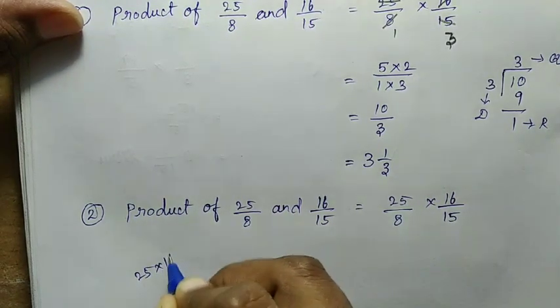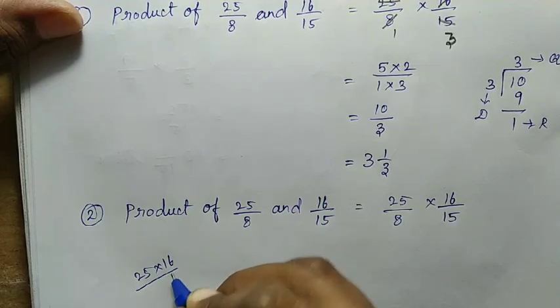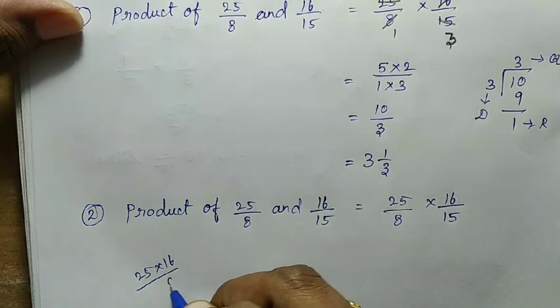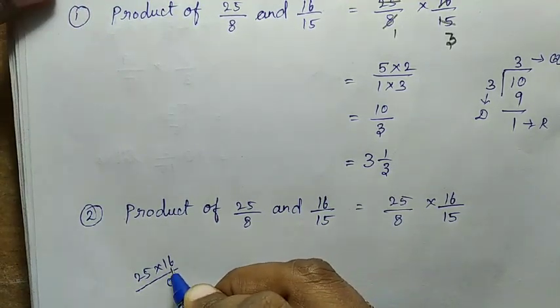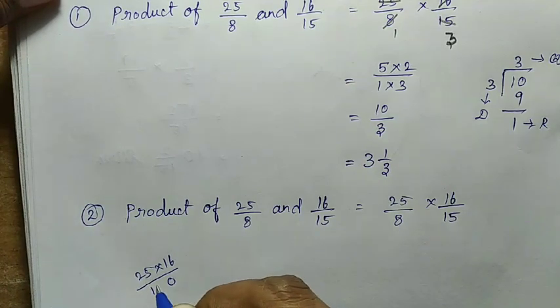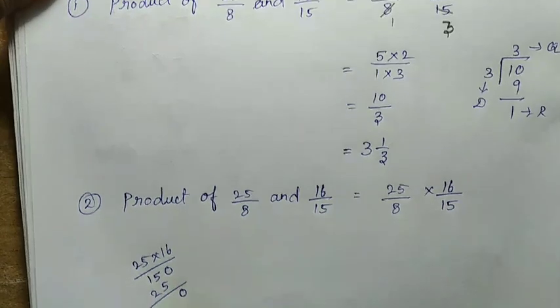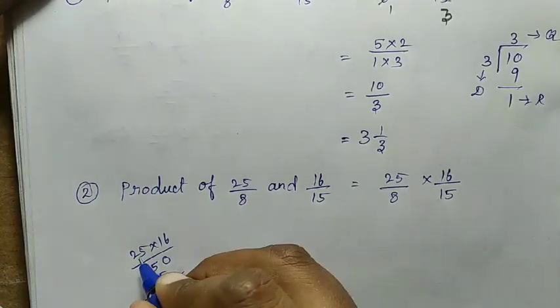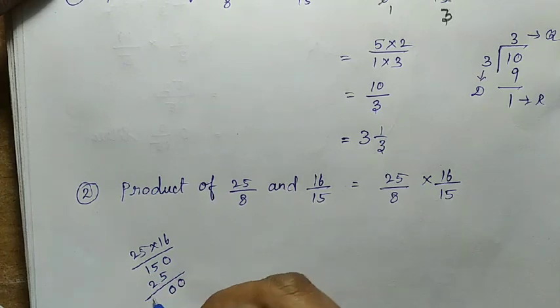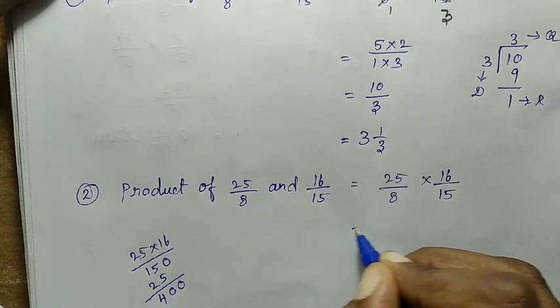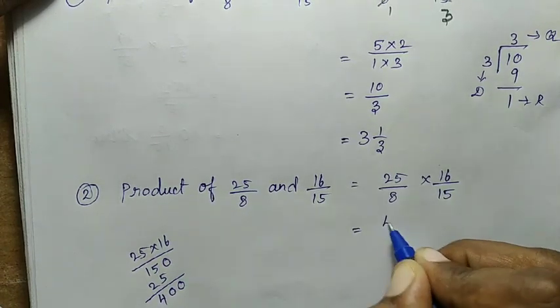25 into 16: 6 times 5 is 30, remaining 3. 12 plus 3 is 15. 1 times 5 is 5, 1 times 2 is 2. That's 0. 5 plus 5 is 10, 0 remaining 1. 2 times is 4. So in the numerator value, we multiply to get 400.